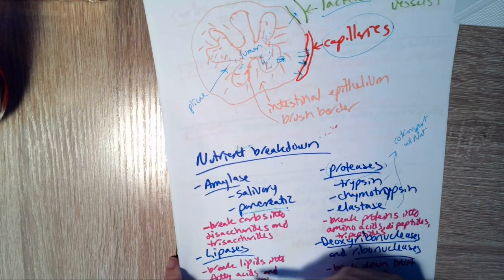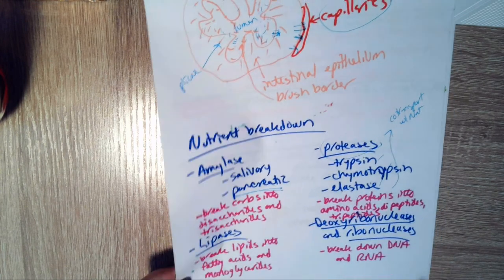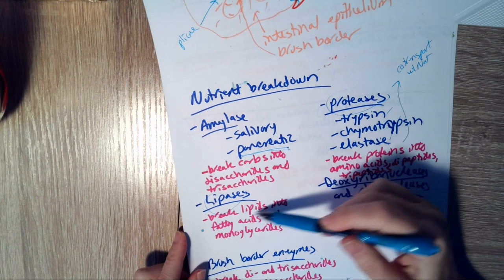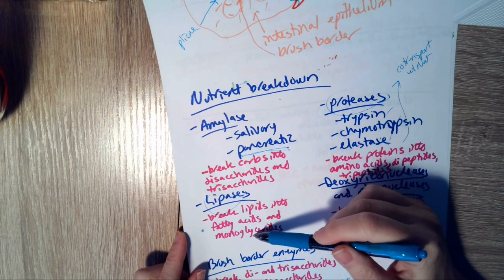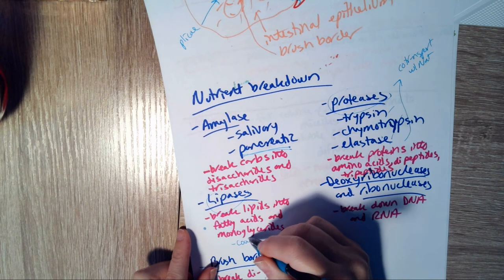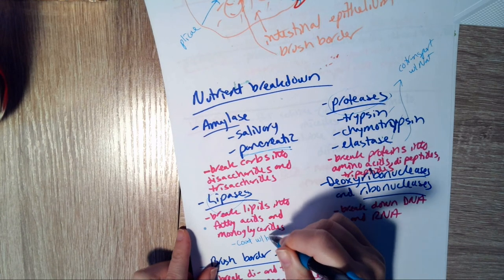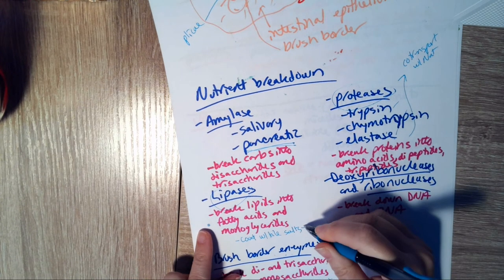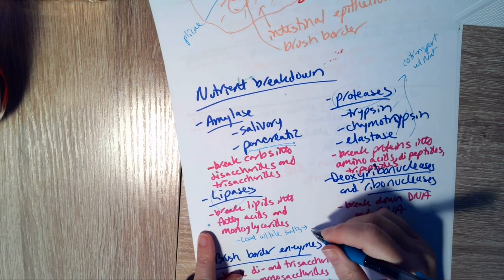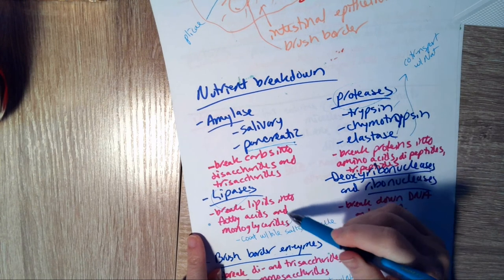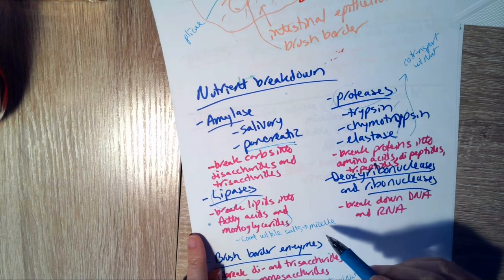Now our lipids are a little bit more complex, just because they're so big. So we have lipases that are in pancreatic juice. They're going to break those lipids into fatty acids and monoglycerides. Then we're going to coat those with bile salts. So this is where bile comes in. And once we've coated it with bile salts, it's called a micelle. So a micelle is just kind of like a piece of fat that's covered with bile.